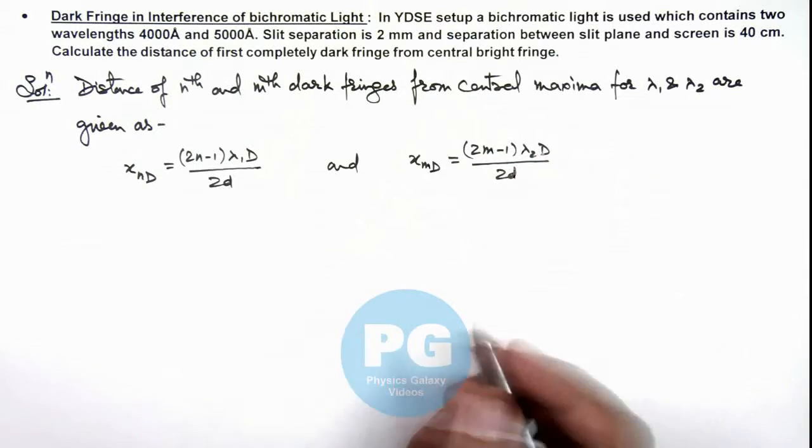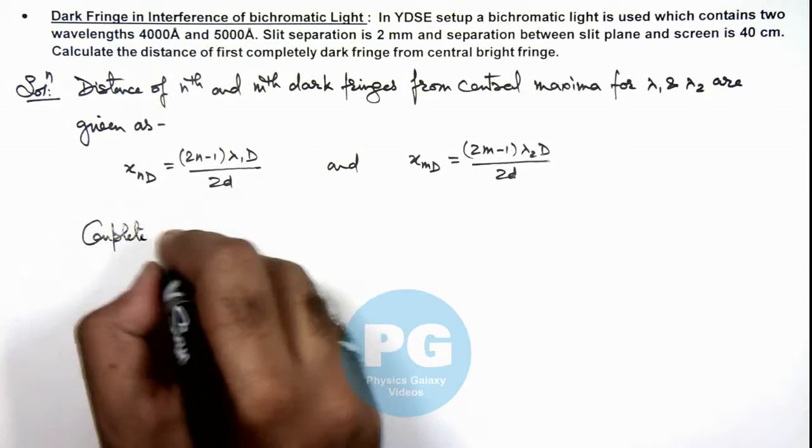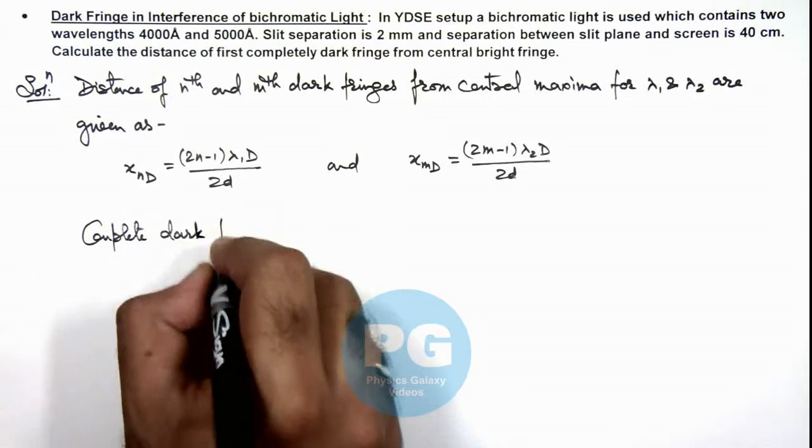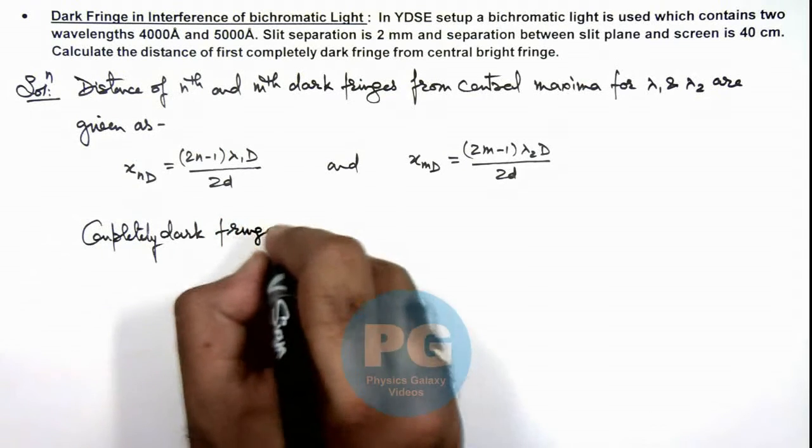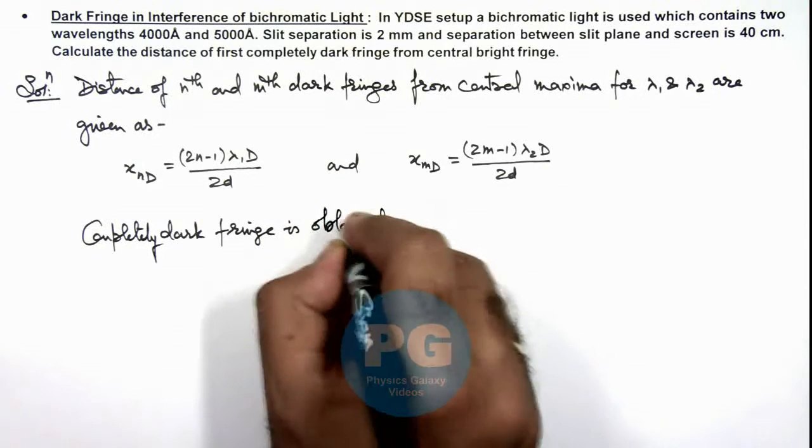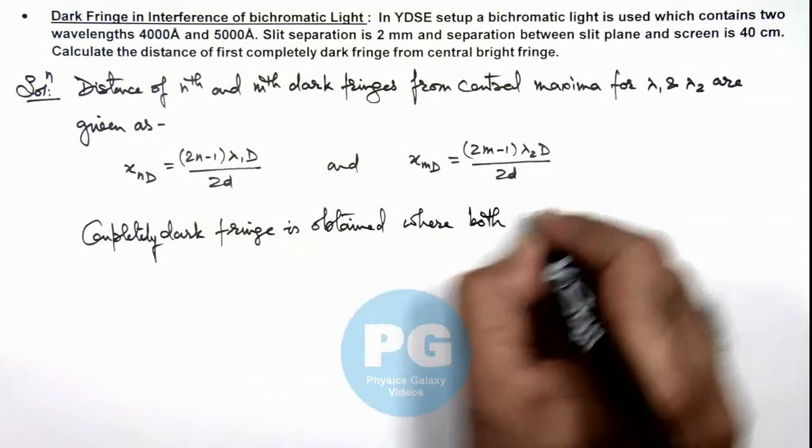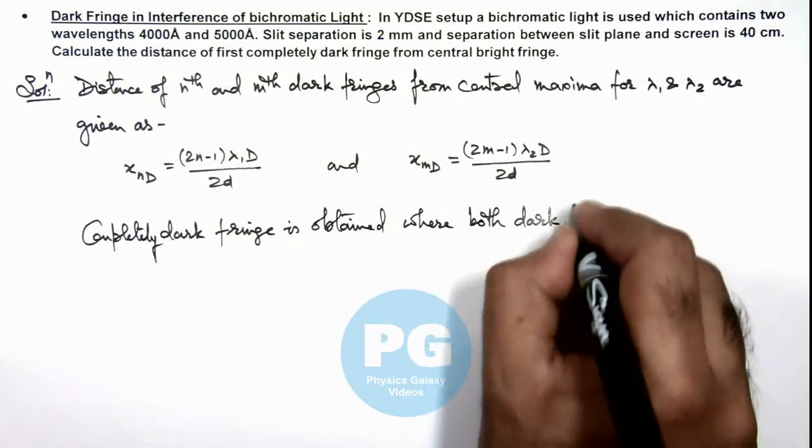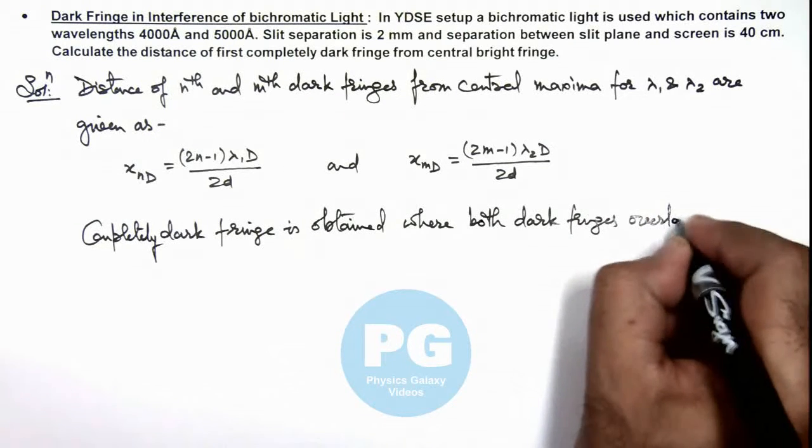We know that a completely dark fringe is obtained where both dark fringes overlap on the screen.